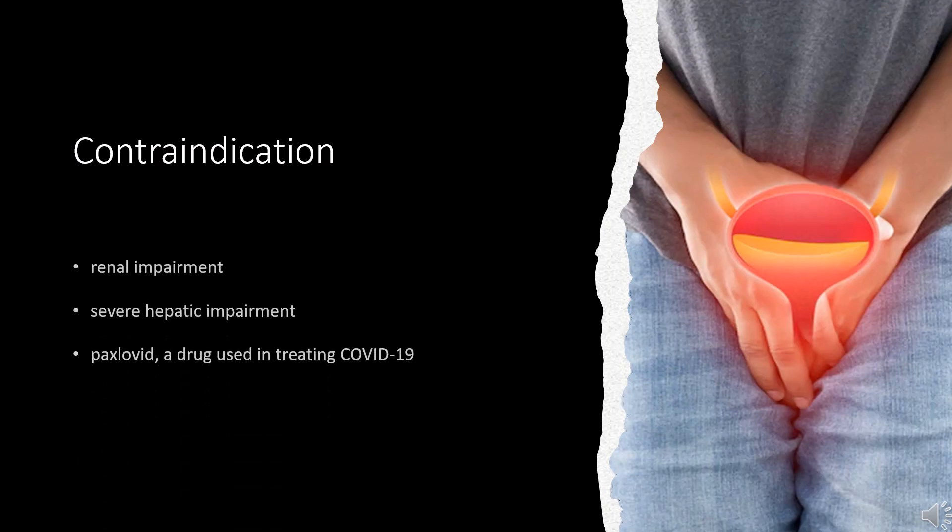What is silodosin used for? Silodosin is indicated for the treatment of the signs and symptoms of benign prostatic hyperplasia, BPH. It is not indicated for the treatment of hypertension.